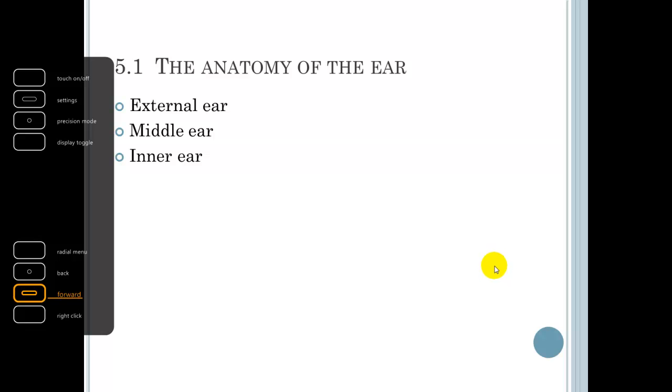5.1, Anatomy of the Ear. You have the external ear, the middle ear, and the inner ear.